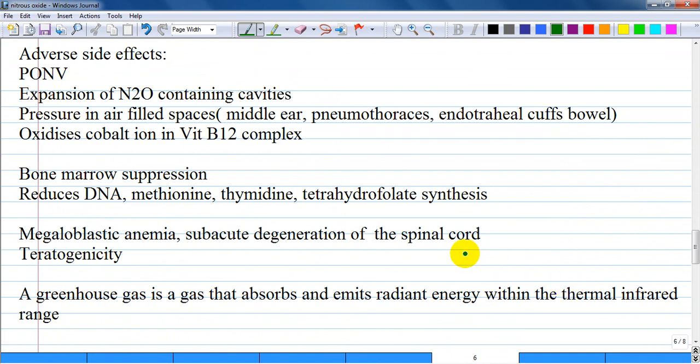The use of nitrous oxide in general anesthesia is associated with side effects, especially increased incidence of postoperative nausea and vomiting. The exact etiology is unknown but is thought to be from bowel distension.